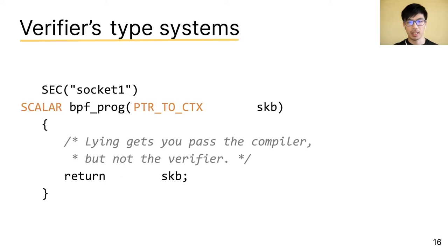The verifier does not see all the types we wrote. Instead, the verifier has its own type system. And in this case, it will infer from the ground up that SKB is pointer to context, which is not the same type as scalar. And thus reject the program.